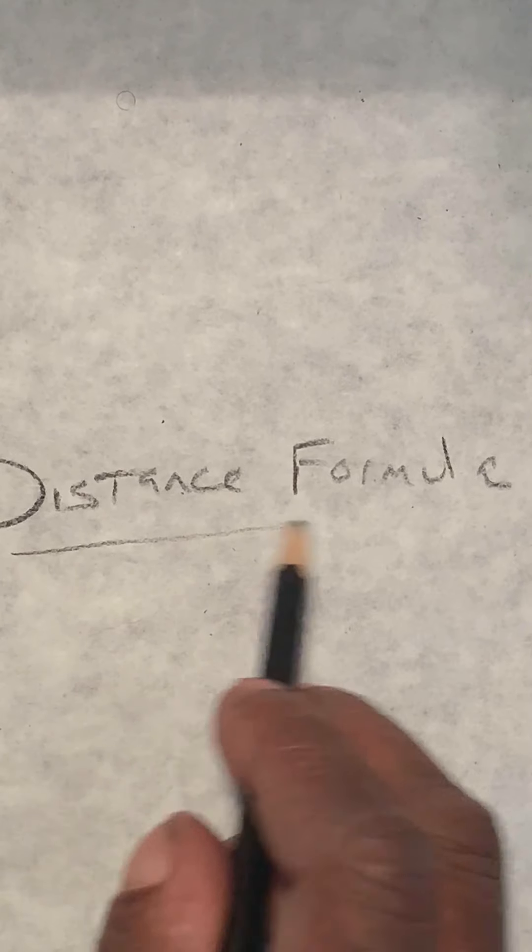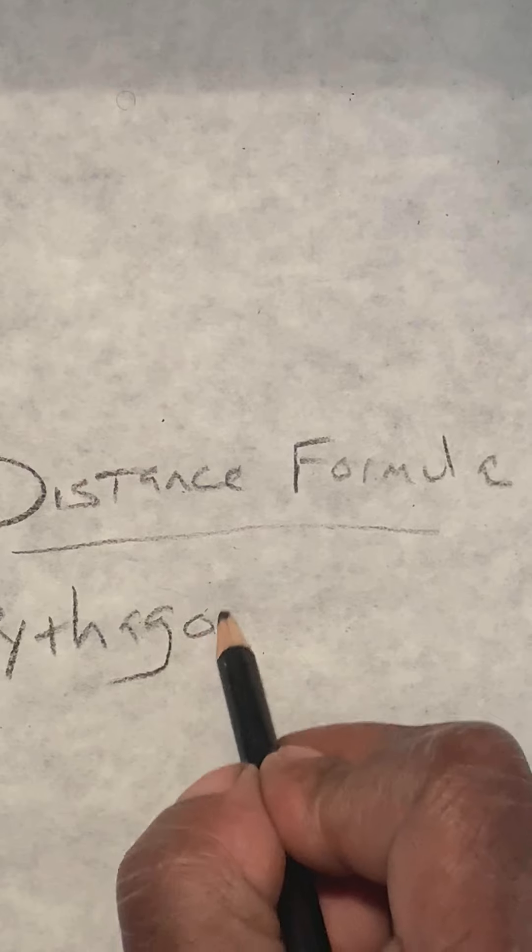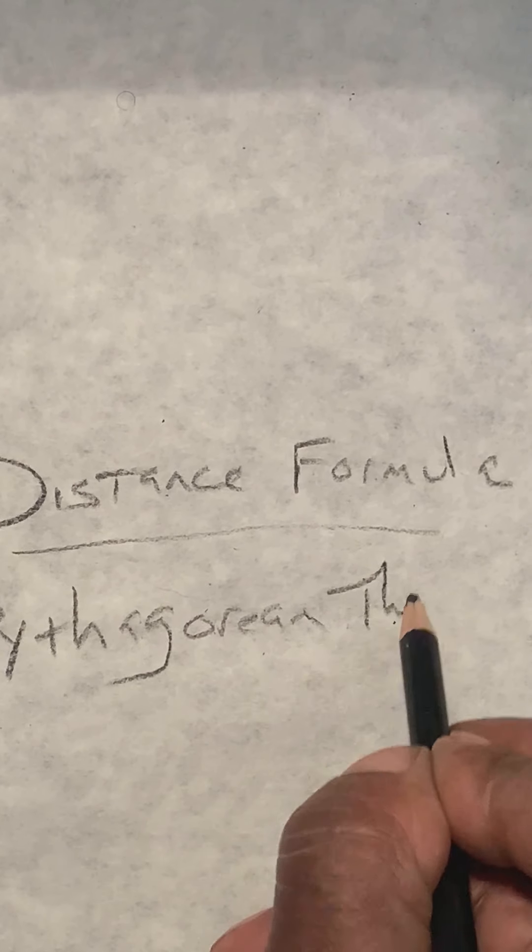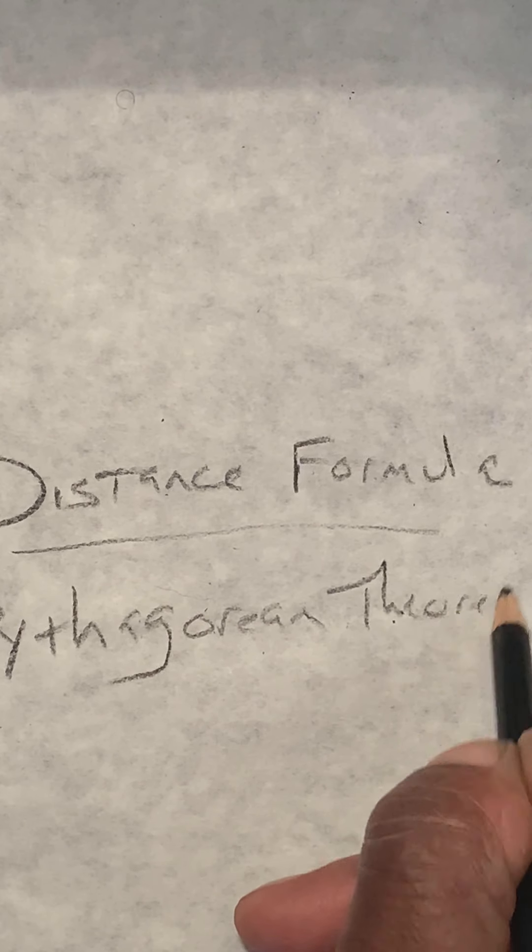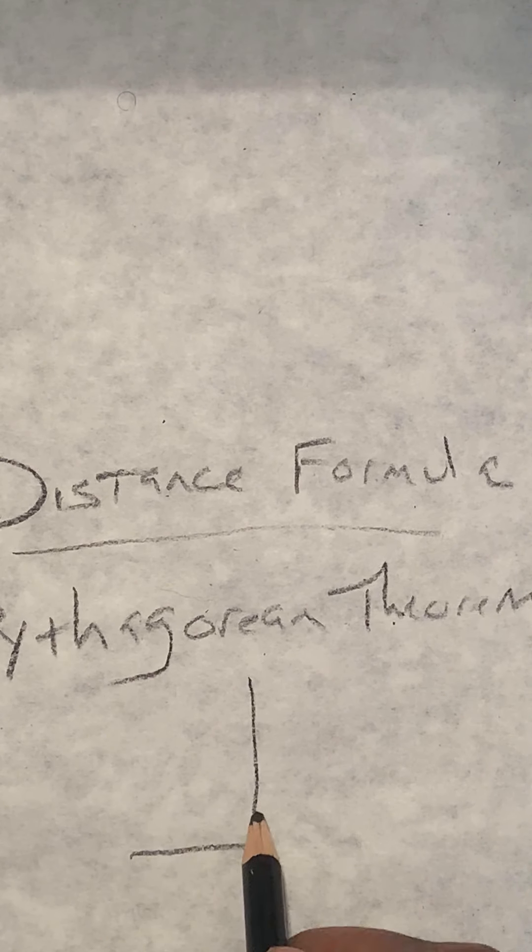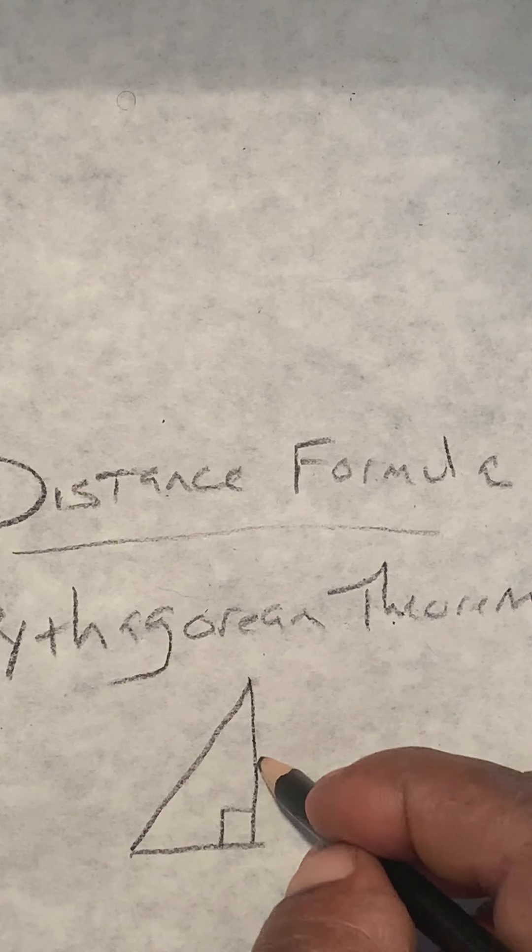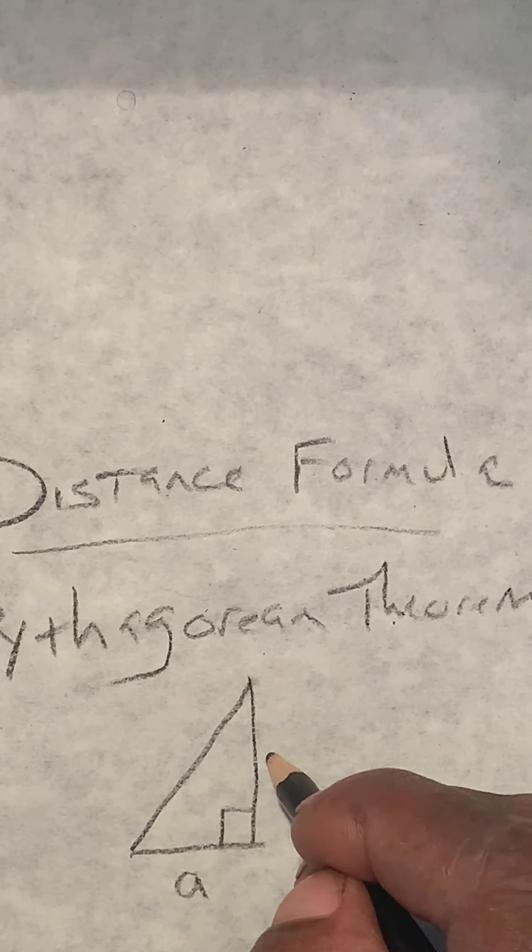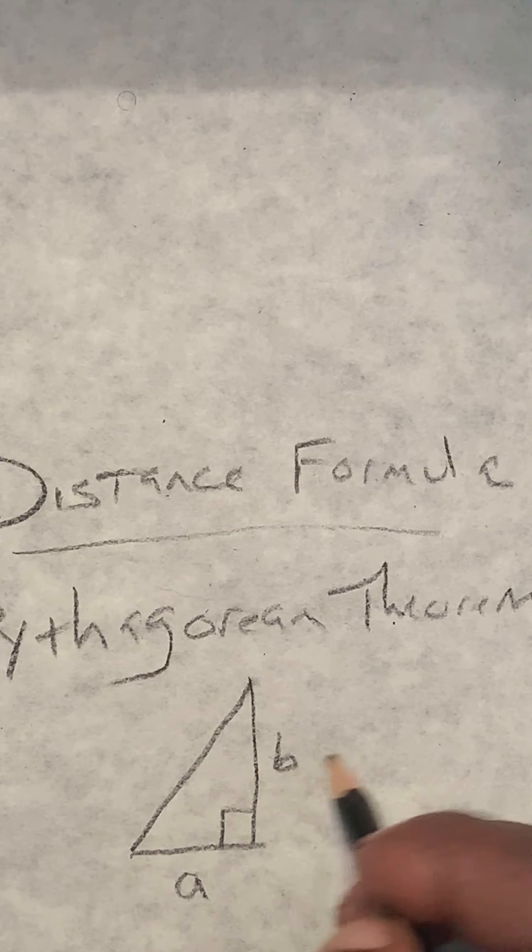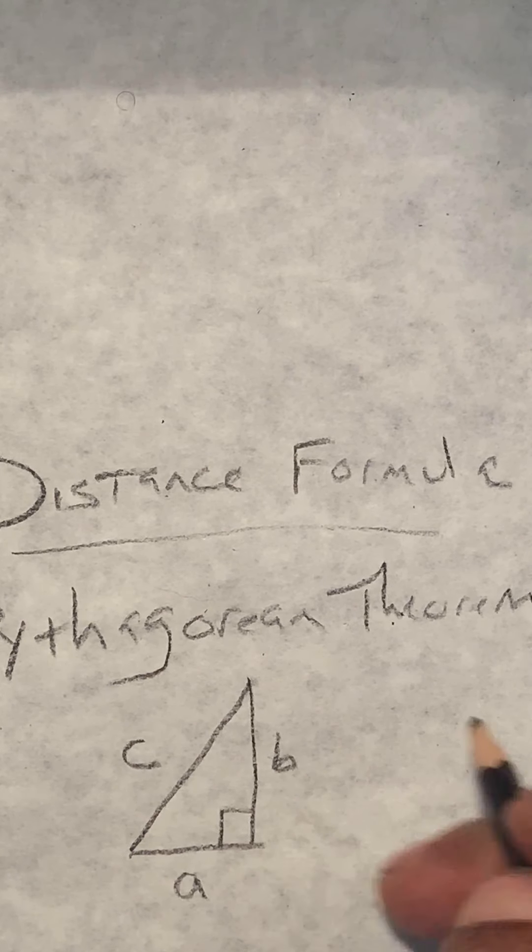The distance formula is derived from the Pythagorean Theorem. And the Pythagorean Theorem, as you may recall, for any triangle that is a right triangle, the length of the short side, we'll call it A. The length of the medium side, we'll call it B. And the length of the long side, we'll call it C, have a special relationship.